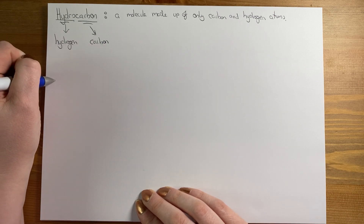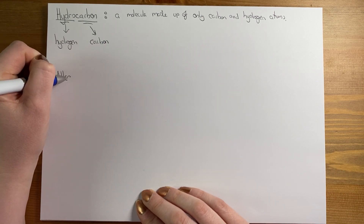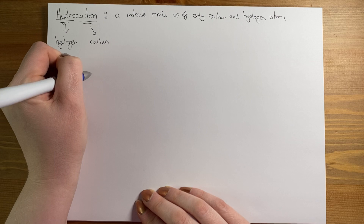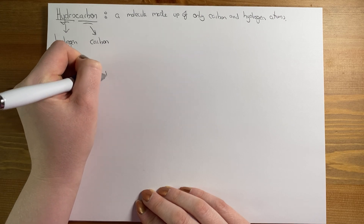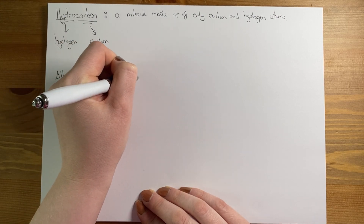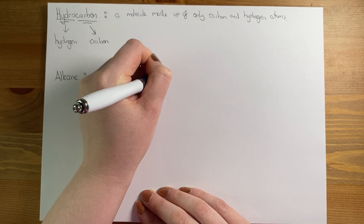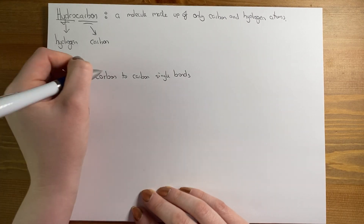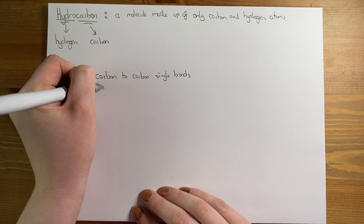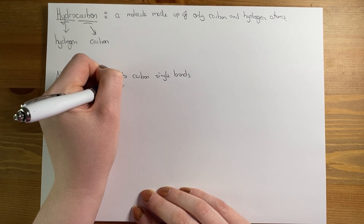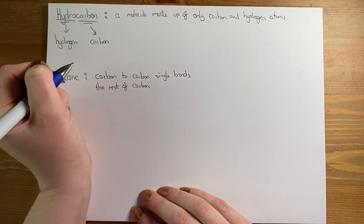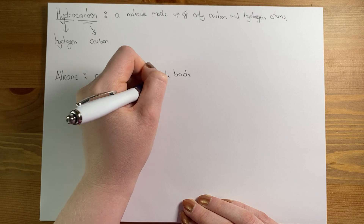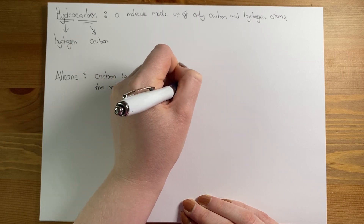The first family we're going to talk about is the alkane family. The alkane family has carbon-to-carbon single bonds only — so between any two carbons there are only single bonds. The rest of carbon's valency is taken up by hydrogen atoms.